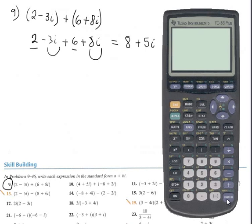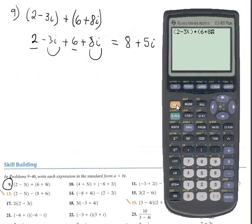Each example I want to verify using the calculator. Enter parenthesis (2 minus 3i), close the parenthesis, plus parenthesis (6 plus 8i), and press enter. The answer is 8 plus 5i. Perfect.